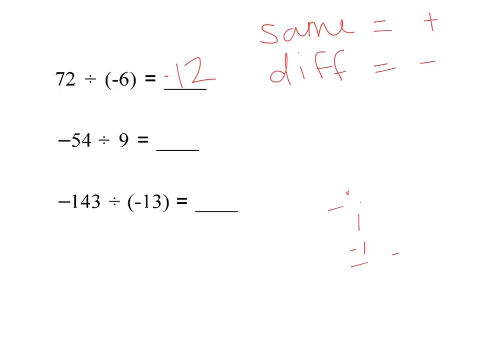When I go to my second problem, it is negative 54 divided by 9. So again, I'm going to take just the regular numbers, 54 divided by 9. 9 goes into 5 zero times, so 9 goes into 54 six times, which works out perfectly. So I'm getting 6 as my answer, but again, I need to look back. I have a negative and a positive number, so my answer is going to be negative since those were different signs.